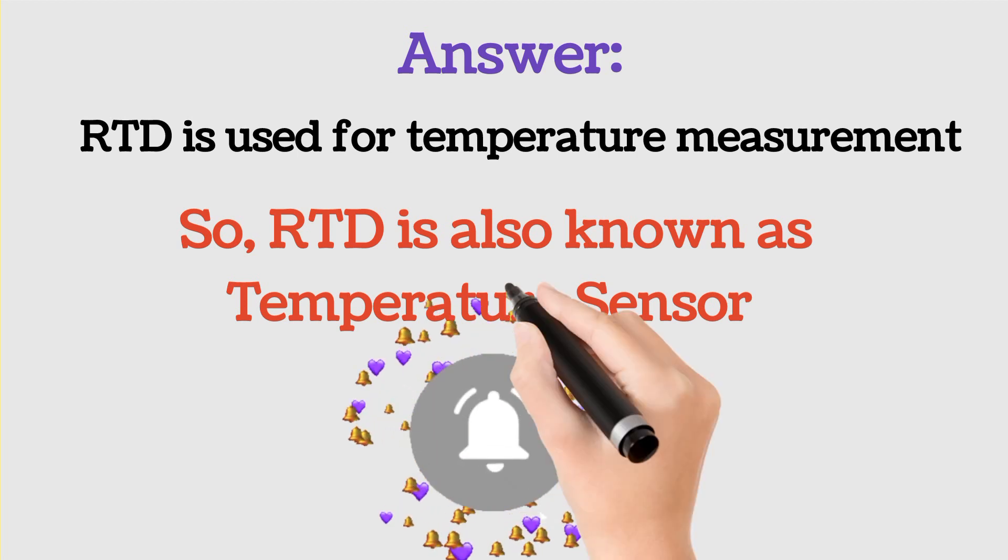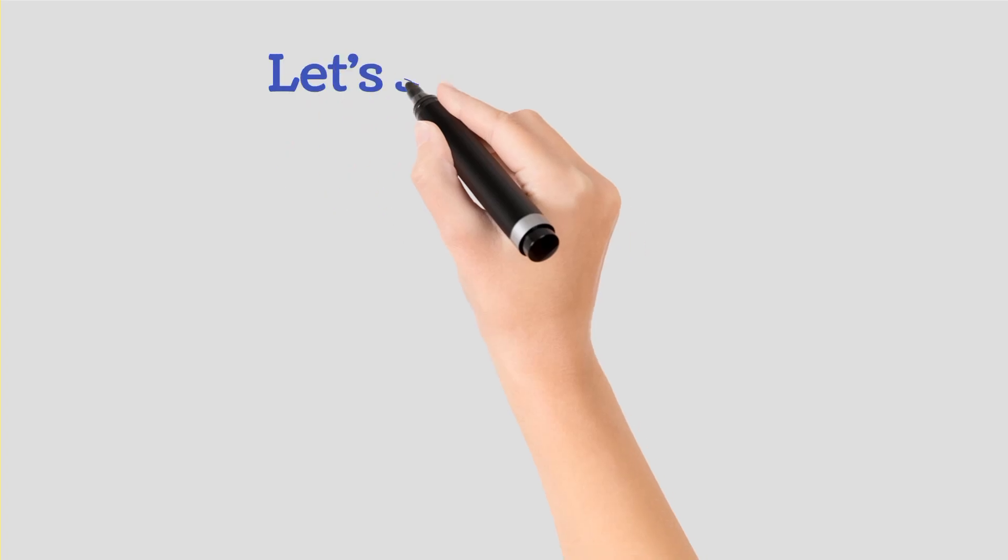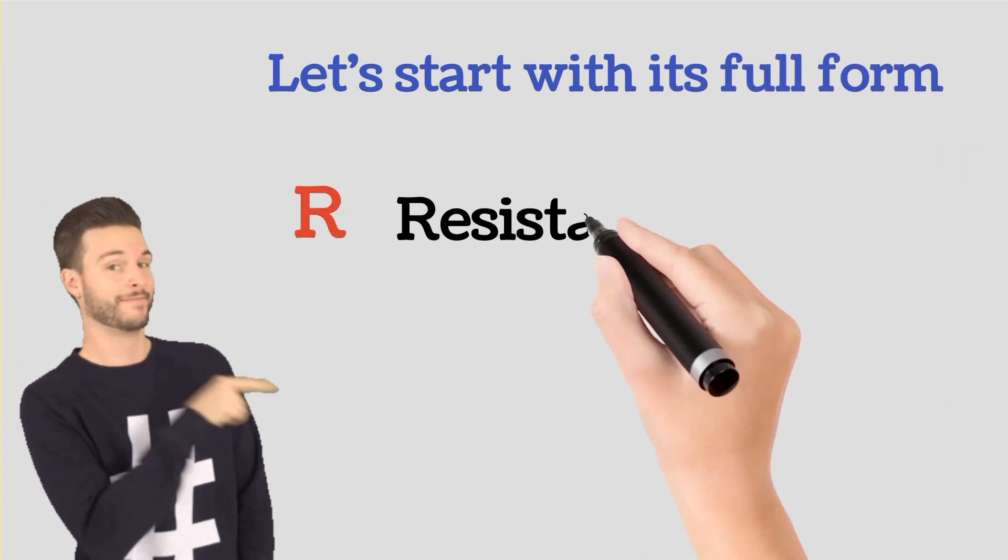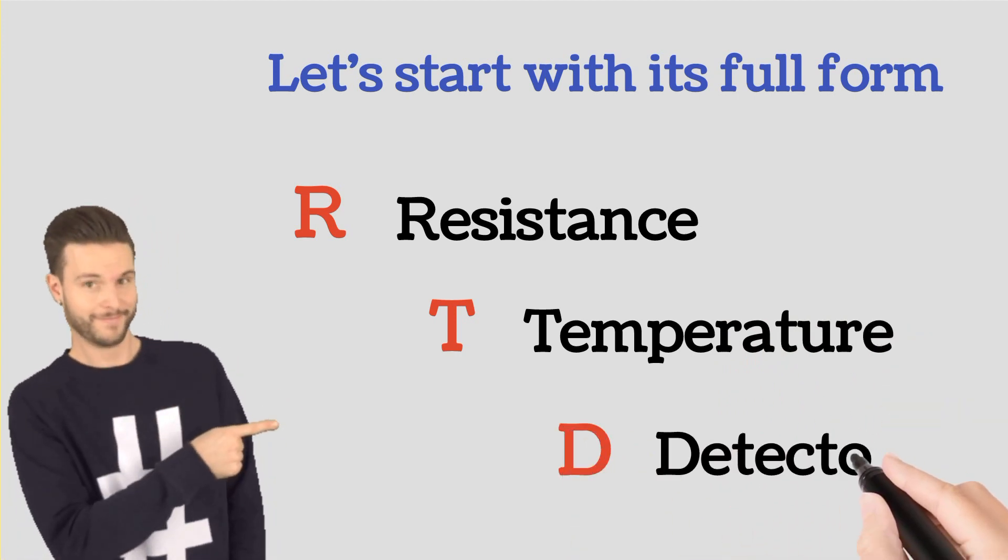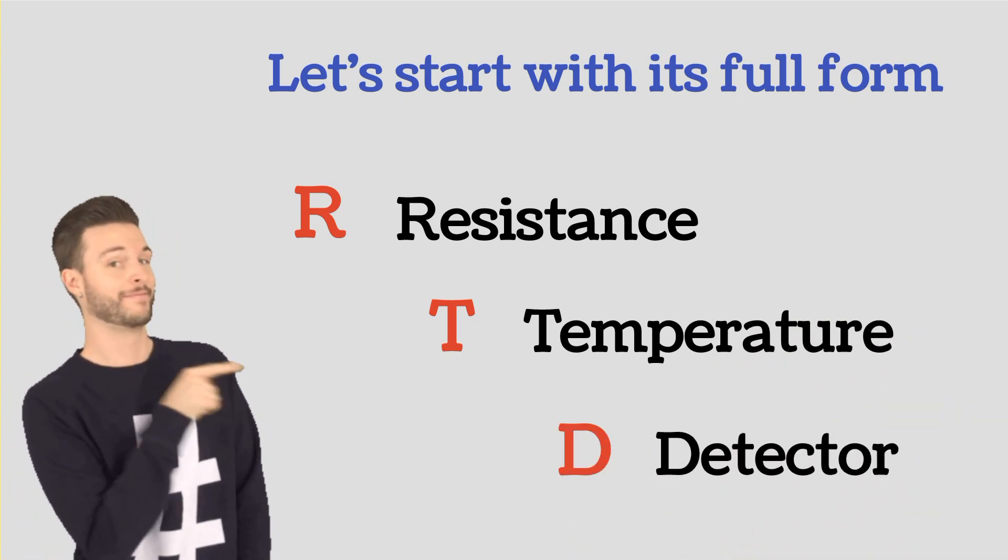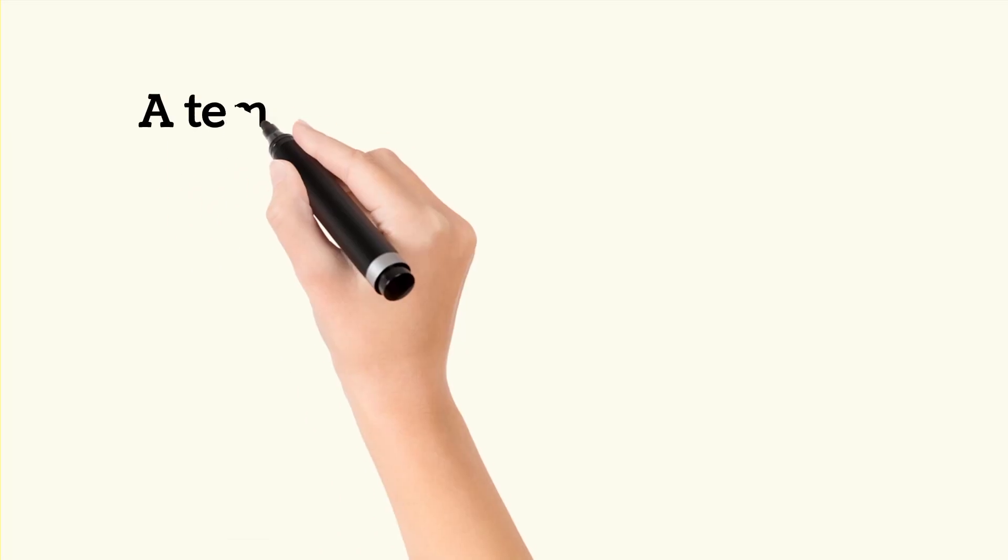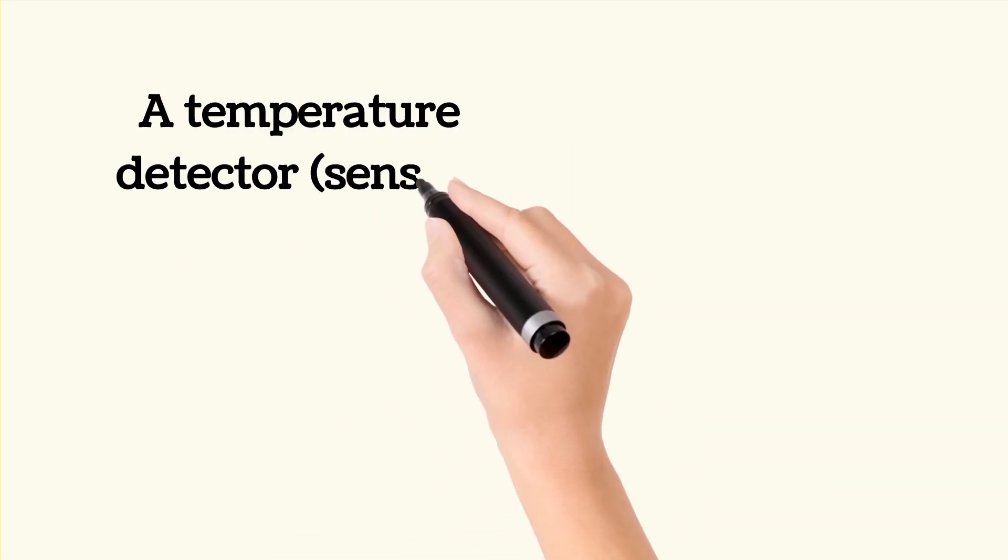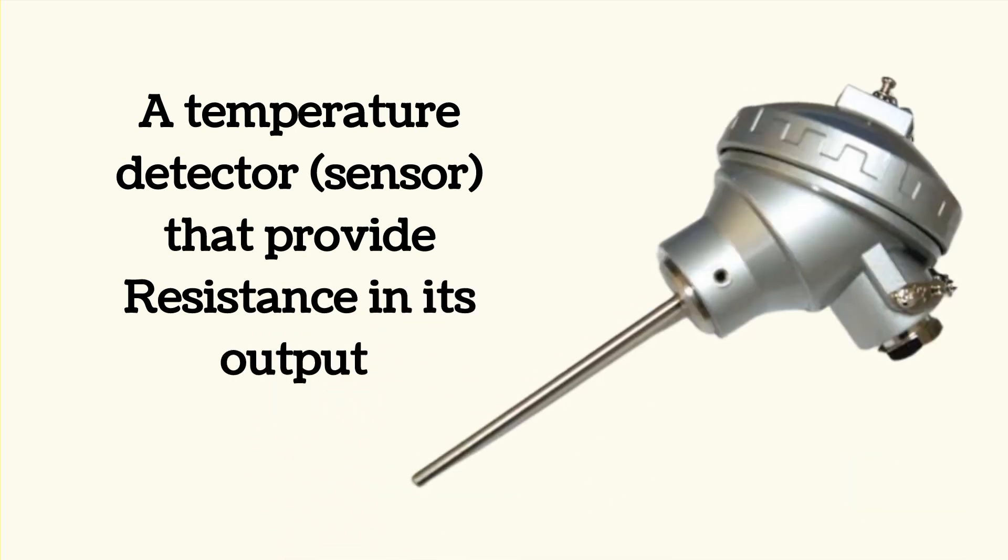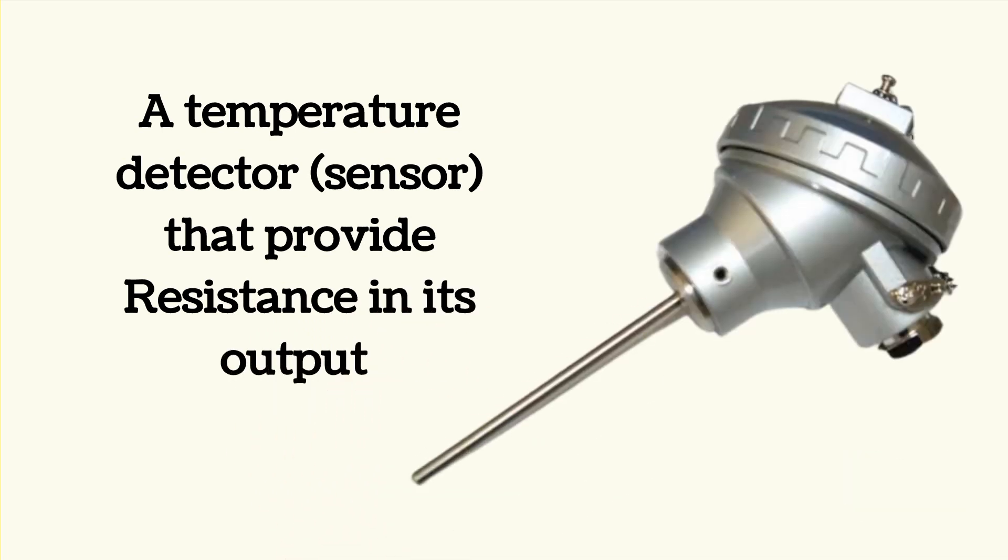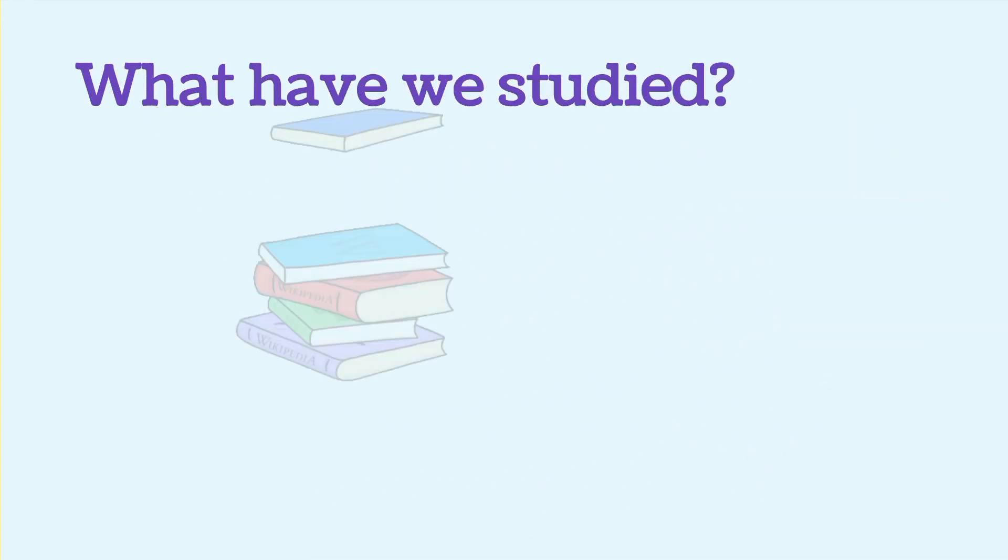For more instrumentation videos subscribe to our channel. Now see the full form of RTD. Here R means resistance, T means temperature, D means detector, so it becomes resistance temperature detector. We can also say it as a temperature detector or sensor that provides its output in resistance is known as resistance temperature detector.